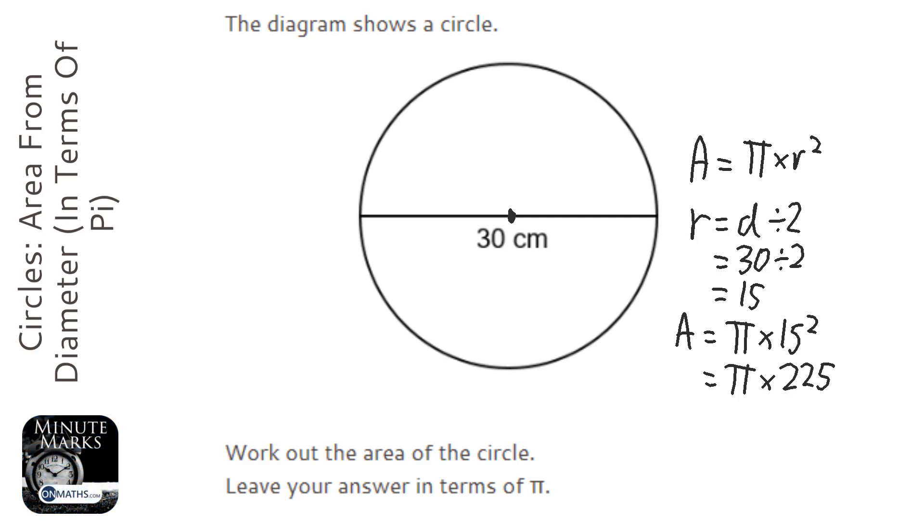Now in algebra if you had x times 225 you would write it as 225x. Now with pi it's not algebra but it works the same way. So the answer in terms of pi, if I write the right number, is going to be 225pi.